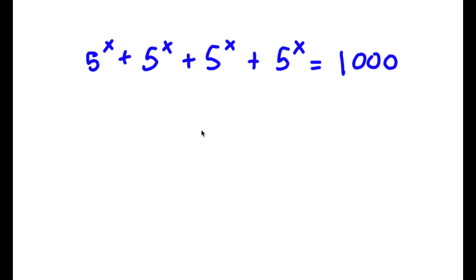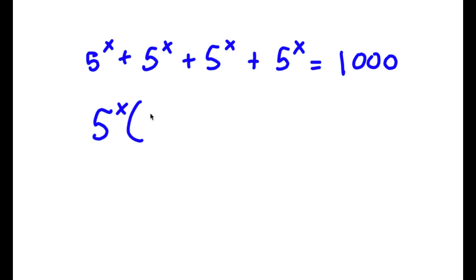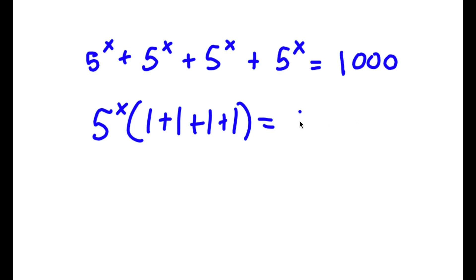In this problem, I have 5 to the power of x plus 5 to the power of x plus 5 to the power of x plus 5 to the power of x is equal to 1000. To solve this, I'm going to first start by factoring out 5 to the power of x. So now I have 5 to the power of x times 1 plus 1 plus 1 plus 1 is equal to 1000.